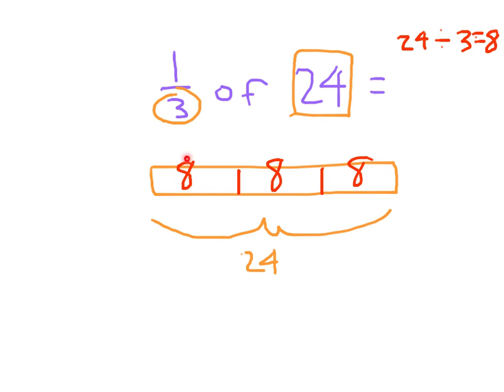Counting them out, it makes sense. 8, 16, then 24. 1 third of 24 is just now just one of these parts. We're looking at one of those parts. We're looking at 1 of those 8s there. And that's why this is 8. 1 third of 24 is 8.